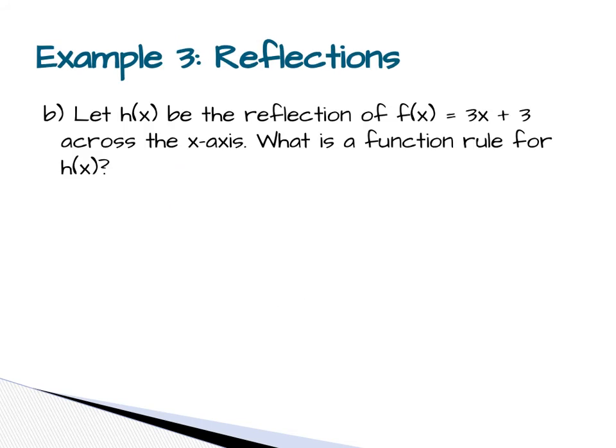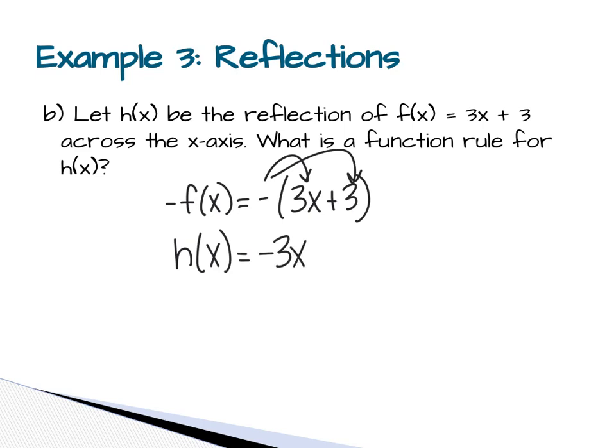Another one of a reflection, we want to reflect it across the x-axis, which means I have to change the sign of the whole function. So that's going to be negative the function. We're going to multiply the whole thing by the negative. So we're going to call this one h of x, and we're going to distribute the negative, and we get negative 3x minus 3. This one was across the x-axis.